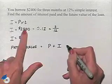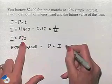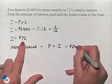So if we take 2,400, which was our principal, and add $72 to it, we end up with $2,472.